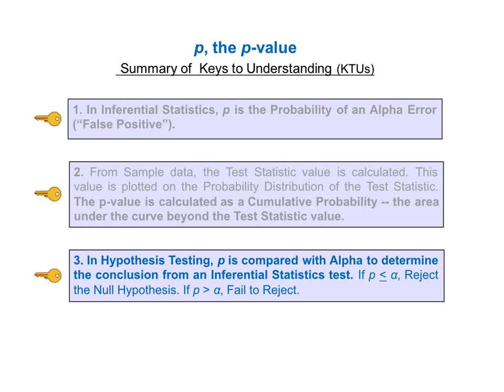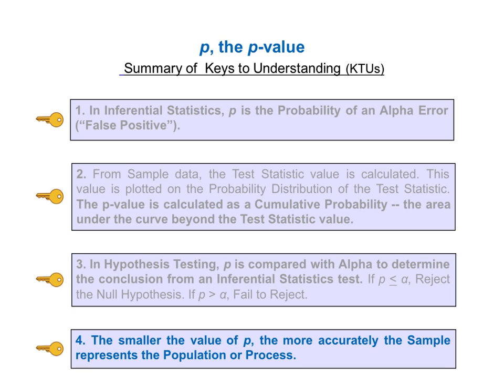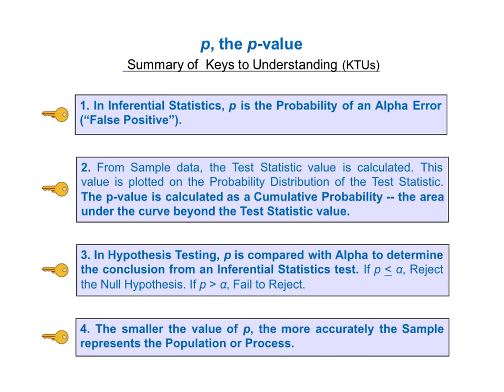Key to understanding number three: in hypothesis testing, P is compared with alpha to determine the conclusion from an inferential statistics test. If P is less than or equal to alpha, then we reject the null hypothesis. If P is greater than alpha, then we fail to reject it. The fourth and final KTU states: the smaller the value of P, the more accurately the sample represents the population or process. Here on one page are the four keys to understanding the concept of P, the p-value. You may want to pause the video here and read them all together.